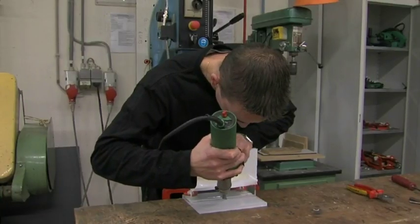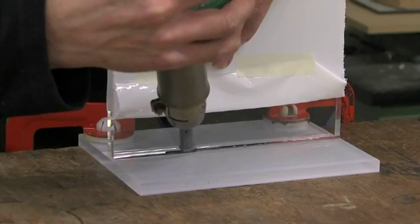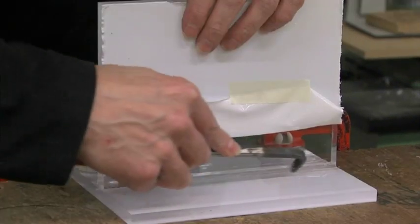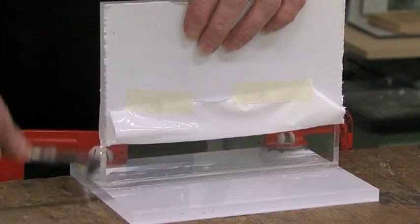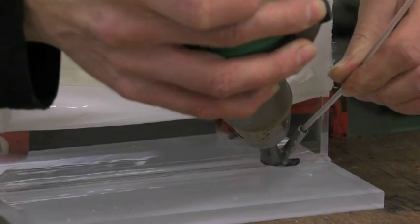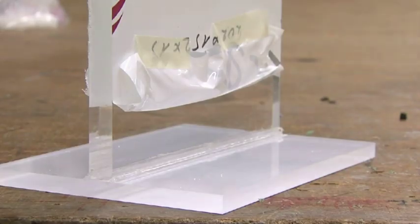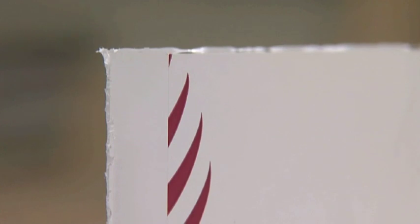Another method for bonding acrylic sheet is welding, using a polycarbonate welding rod and heat gun, as shown here. This provides a strong bond, although the finish of the joint is not quite as clean as when using solvent or UV adhesives.